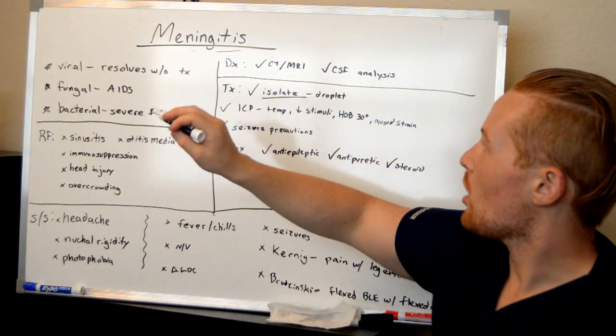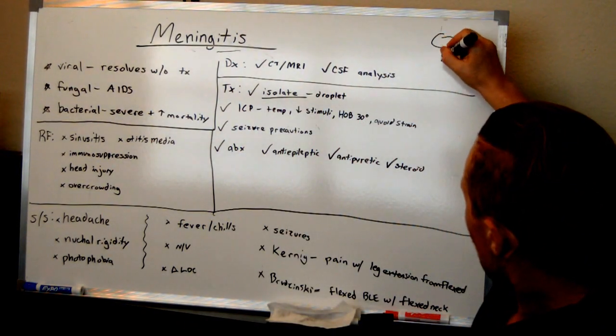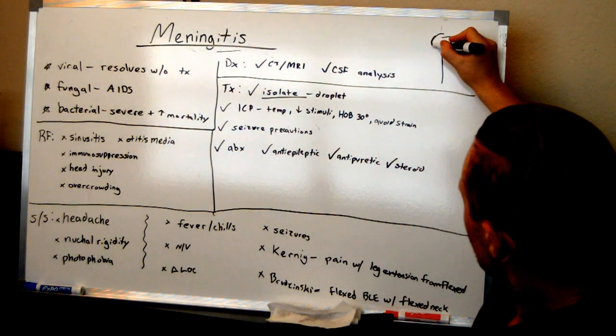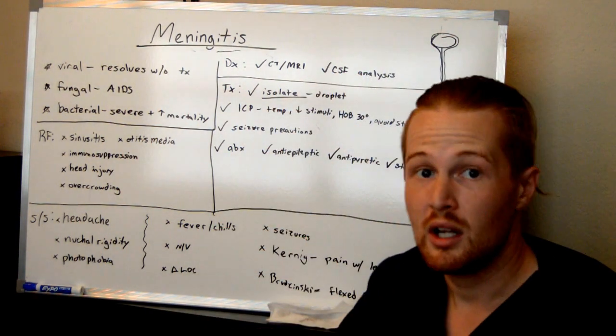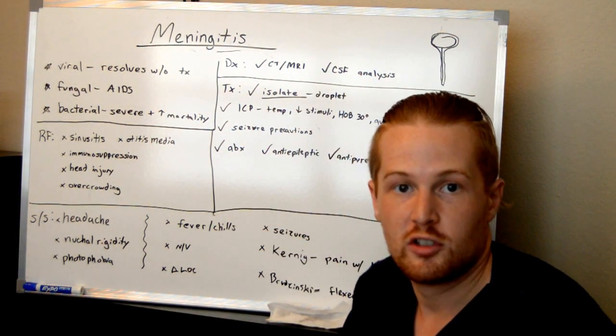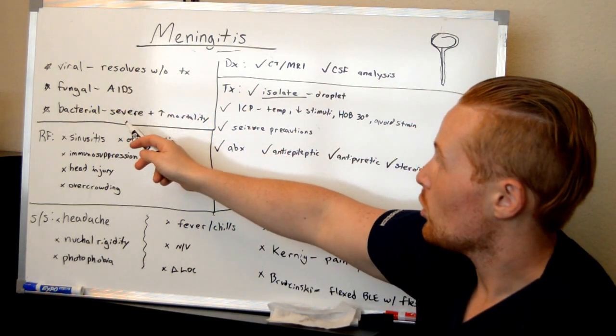And what the meninges are, if you don't remember from A&P, is around the brain and the spinal cord there are various layers, and the meninges are one of the layers that surround the brain and the spinal cord. And there's inflammation caused by an infection, which is either viral, fungal, or bacterial.